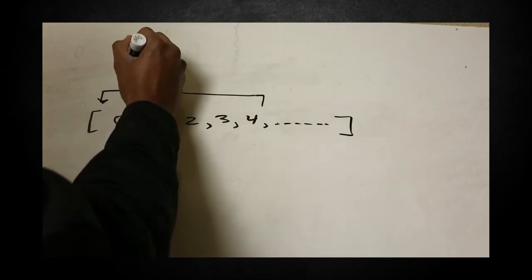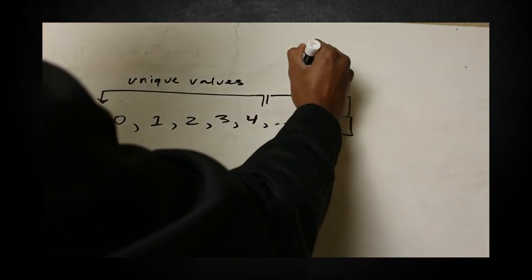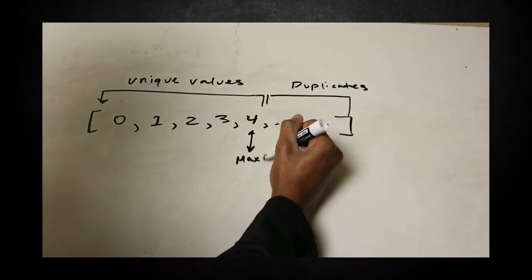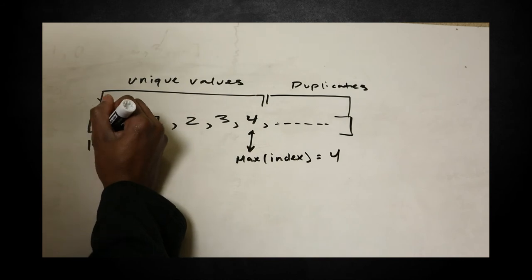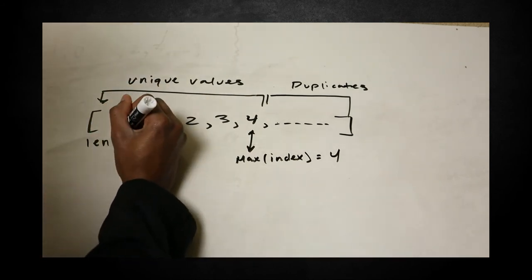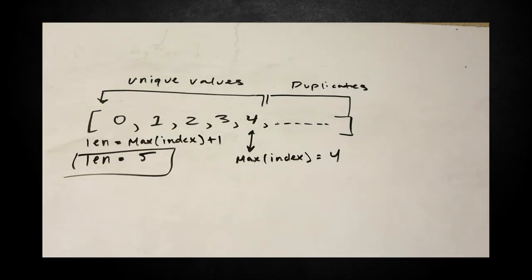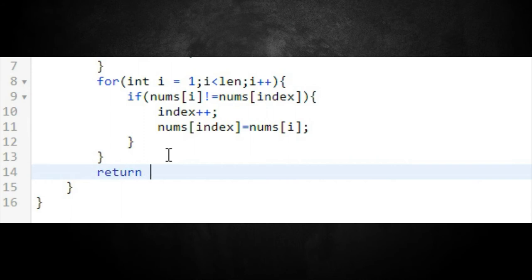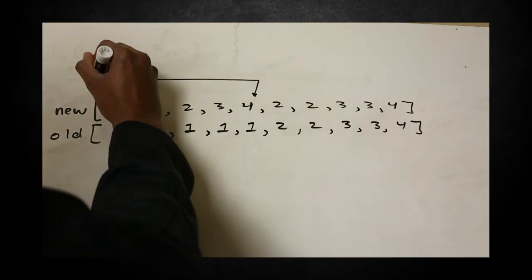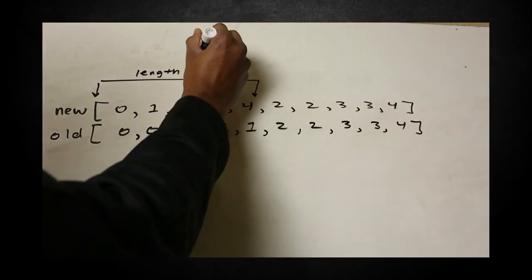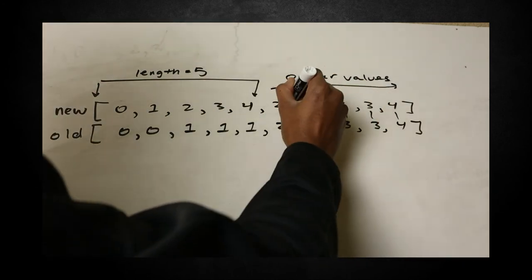For the last part, we return the length of the array without duplicates. We've been incrementing the stationary index only when we find unique values, so index + 1 equals the new length. We return index + 1. When the function is called, it will print only the unique values.